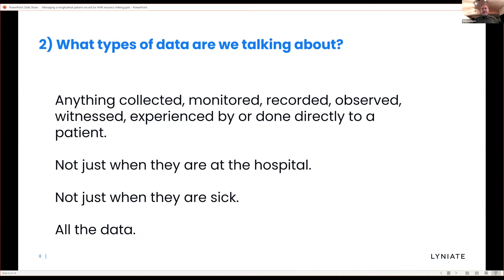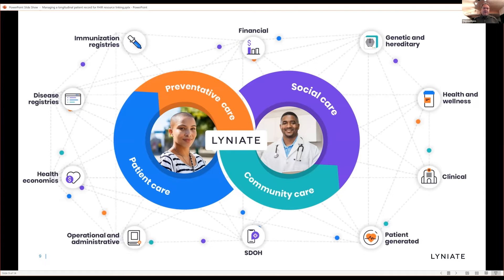What are the types of data we're talking about? What does longitudinal mean? We really literally mean anything — anything that's collected, monitored, recorded, observed, witnessed, experienced, or done as the delivery of care directly to the patient. And that includes not when they're at the hospital, not when they're sick. This could be patient-generated data from fitness trackers or watches, social determinants of health about where the person lives, or even financial data. All of these have sources of identity and representation for how they refer to that patient, so there's a wide collection of records that need to be consolidated.